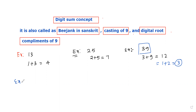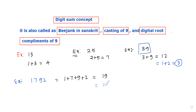Let me take another example: 1, 7, 9, 2. If you are finding the DigitSum of this number, 1 plus 7 plus 9 plus 2 gives 19, but it is a 2-digit number. So again, find the DigitSum of 19: 1 plus 9 gives 10, still a 2-digit number. Again, find DigitSum: 1 plus 0 gives 1. Finally, 1 is the DigitSum of 1792.